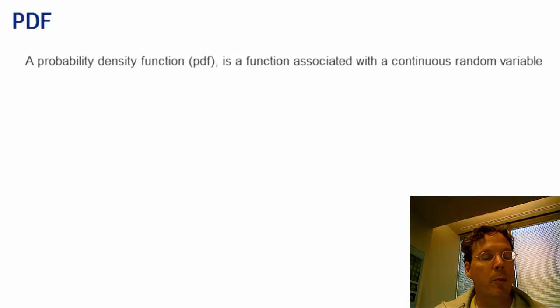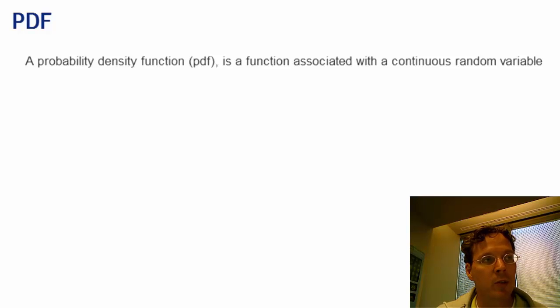In contrast to the probability mass function, which assigns probabilities to specific values for discrete random variables, is the probability density function, which is associated with continuous random variables.